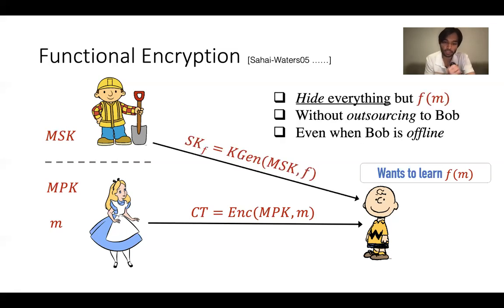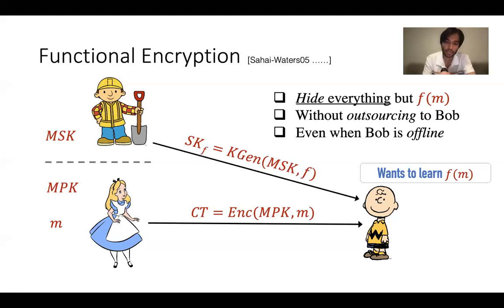In functional encryption, Bob can create some partial decryption keys for a function F, such that given these functional keys, Charlie can perform this computation on its own and learn only F of M, nothing else about the message M.